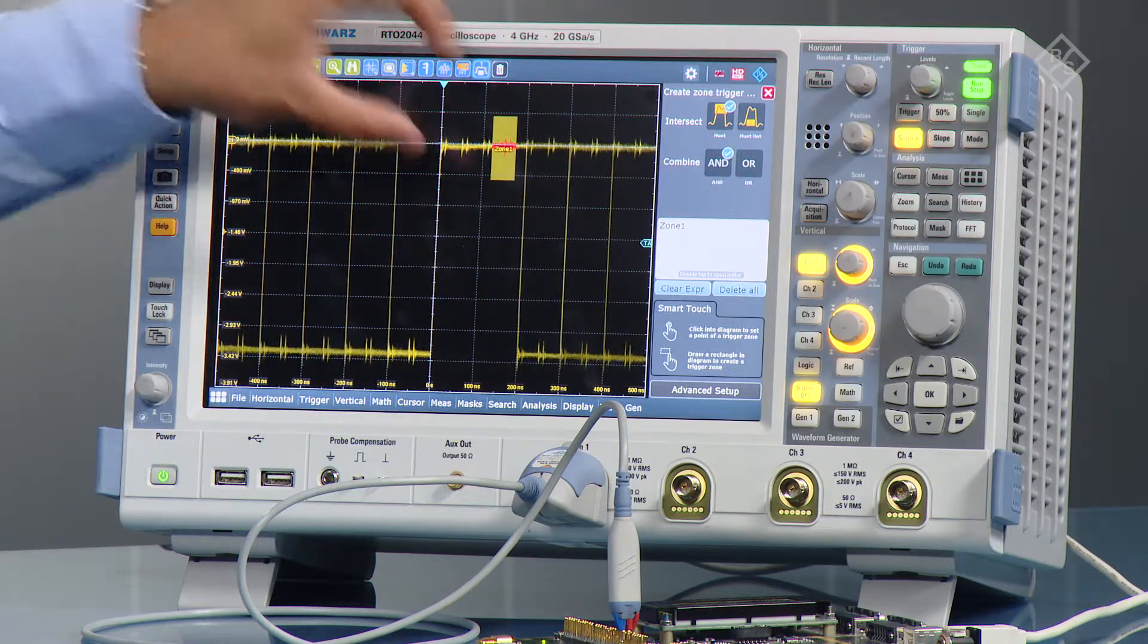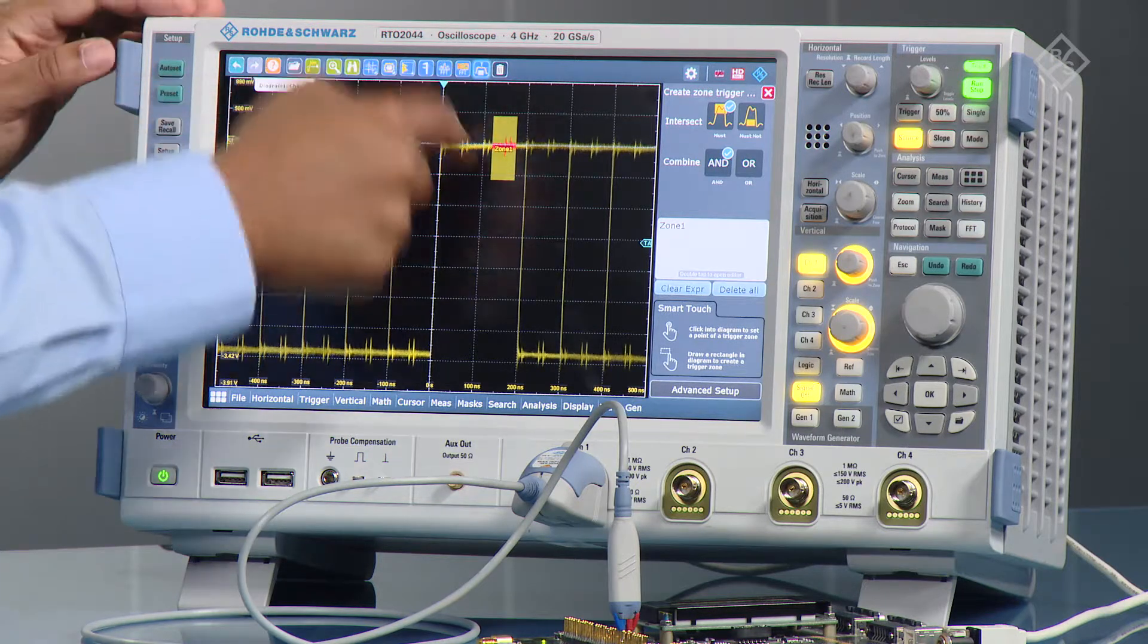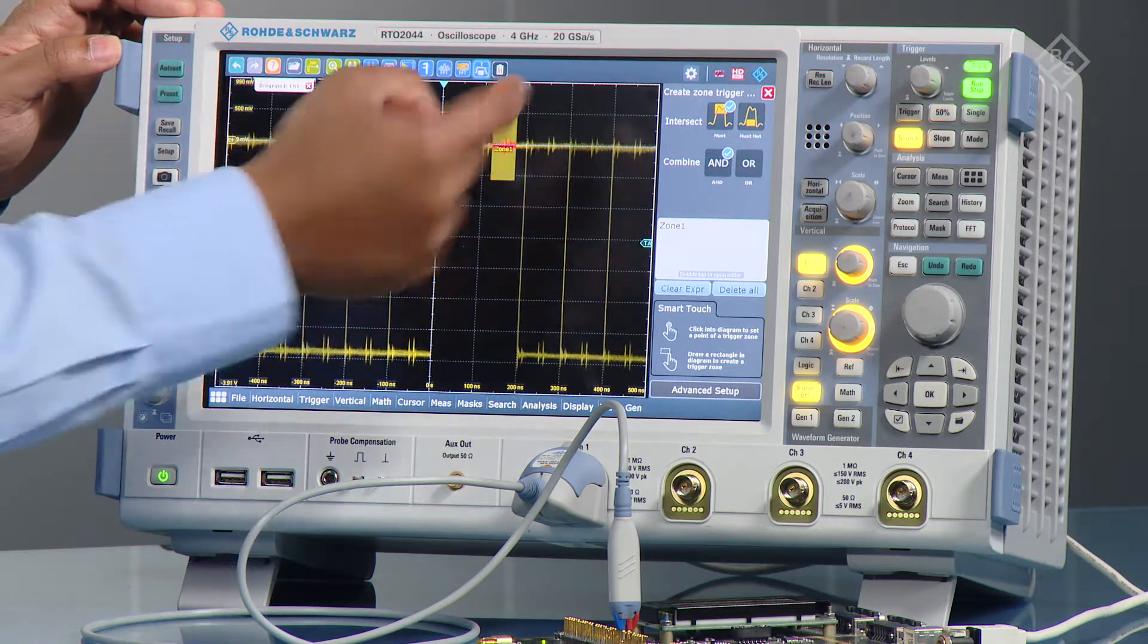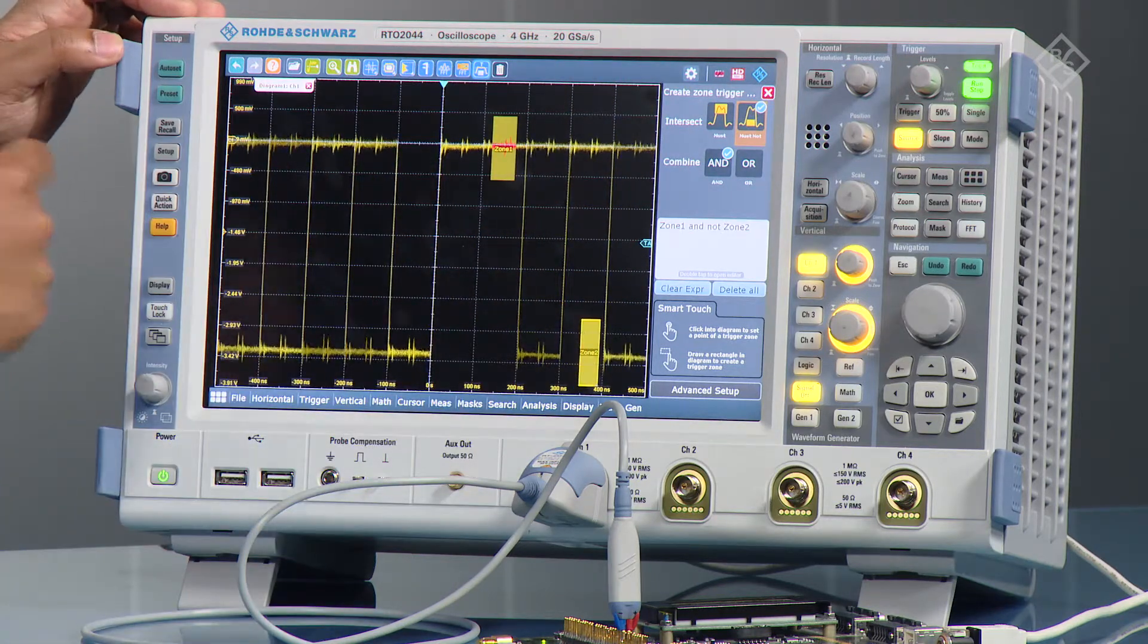As a second step, I can do a must not intersect onto this portion here. And as you can see, I can keep adding logical states onto my definition of the trigger.